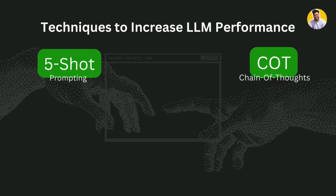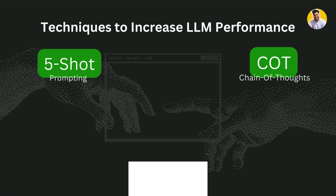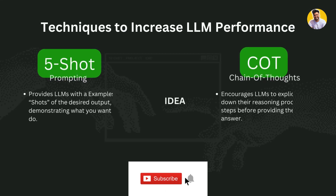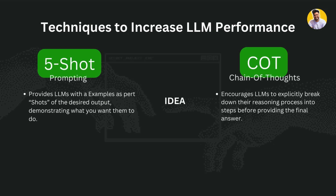On your left side is the 5-shot prompting, and on your right side is the chain of thought prompting. The idea behind the 5-shot prompting technique is that it provides the large language model with a handful of examples of the desired output, demonstrating what you want it to do. But in chain of thought prompting, it encourages the large language model to explicitly break down its reasoning process into steps before providing the final answer.